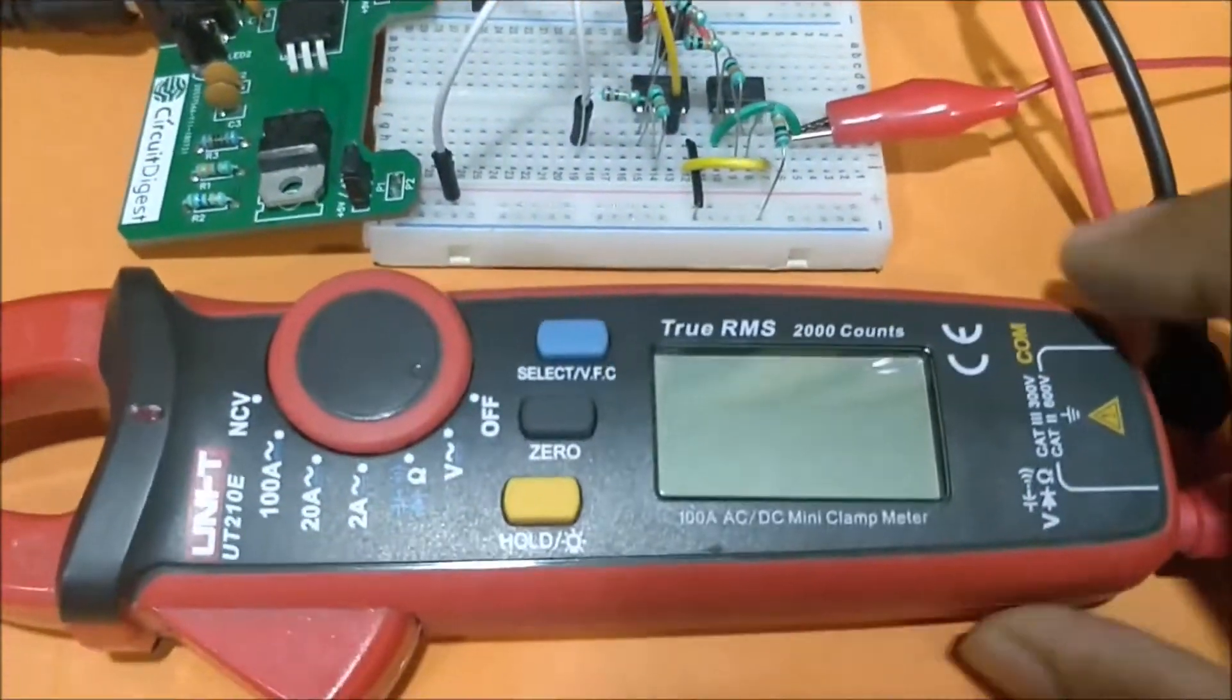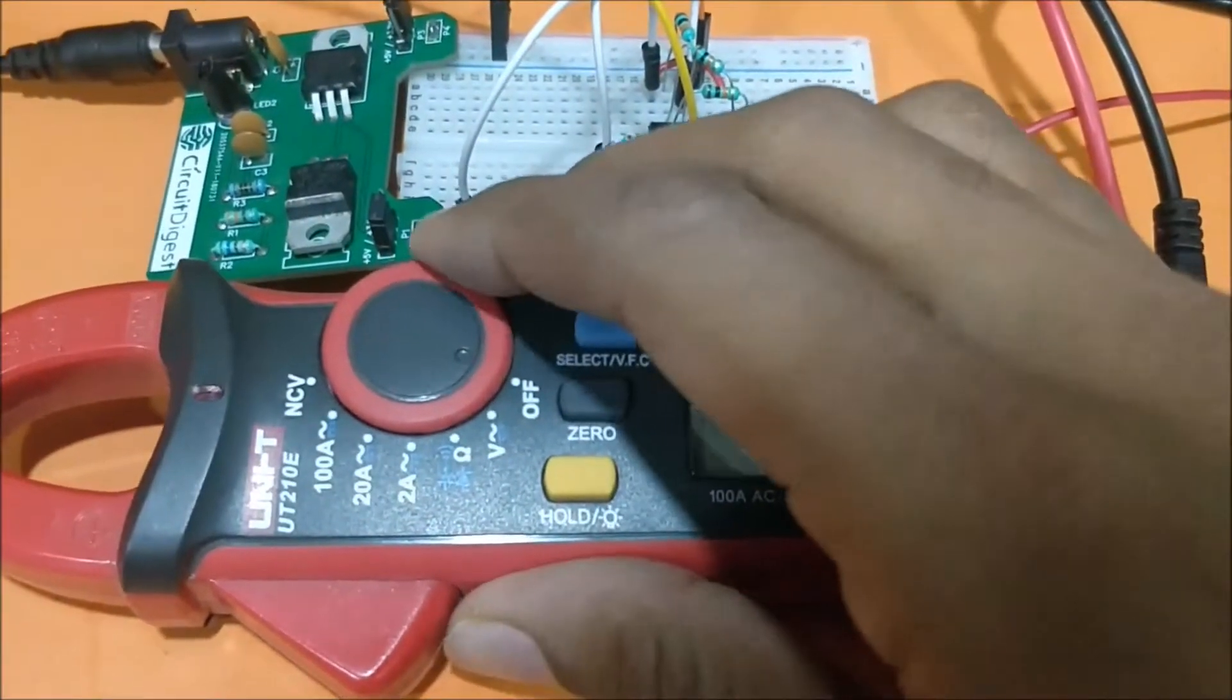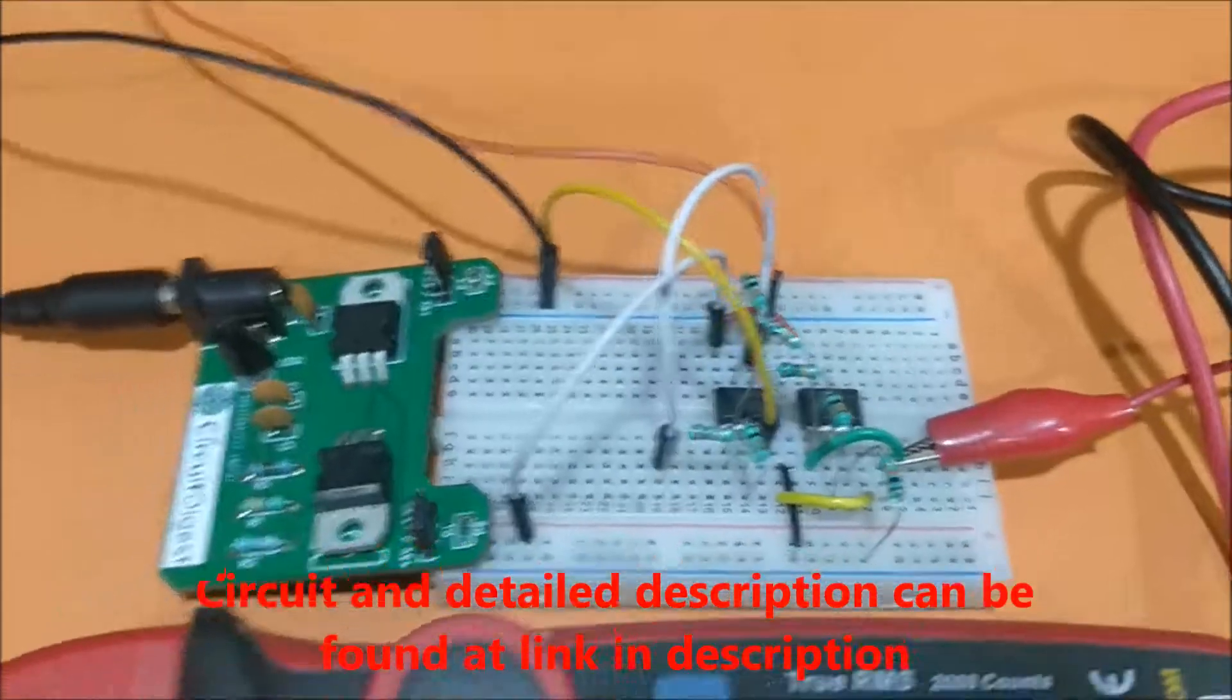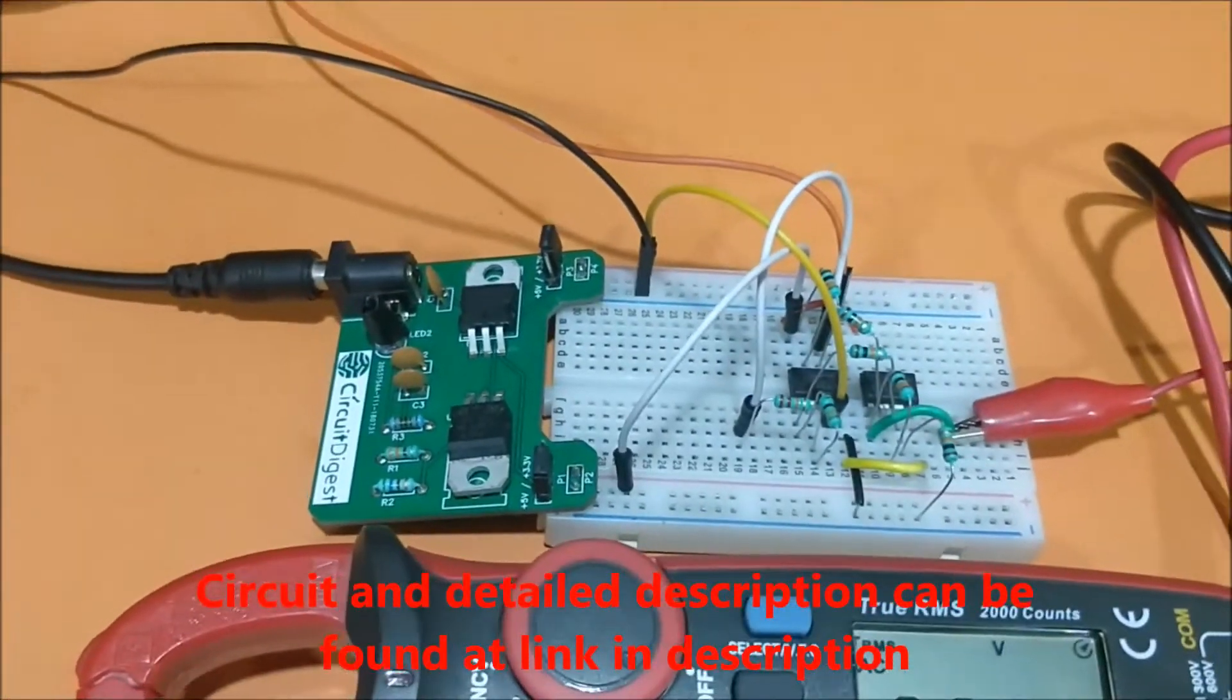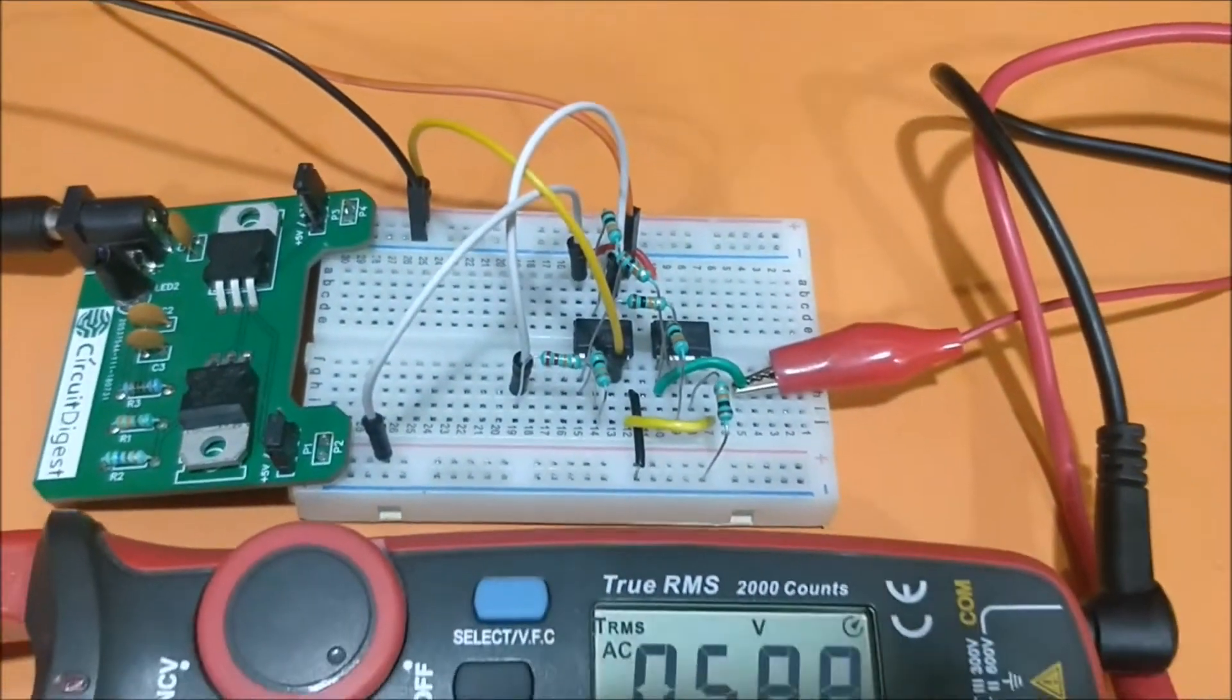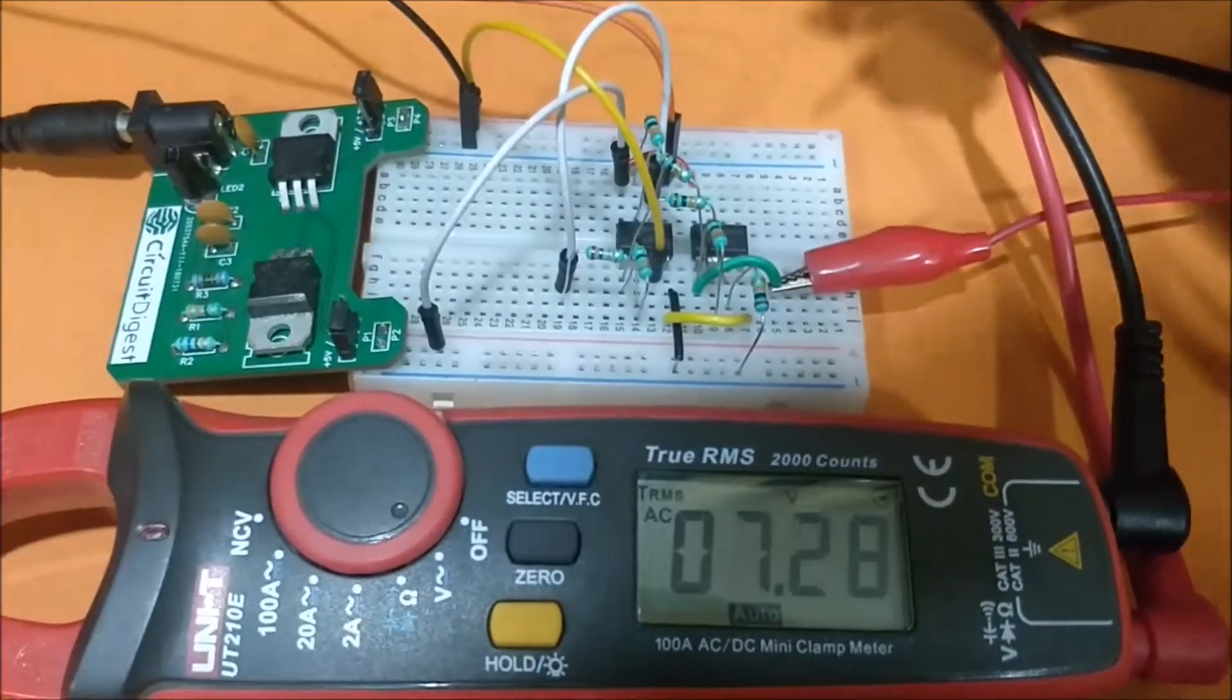We'll use this multimeter to measure the voltage levels on the pins. The circuit diagram and the complete explanation of how an instrumentation amplifier works is given at the link in the description of this video. Let me measure the voltage levels.